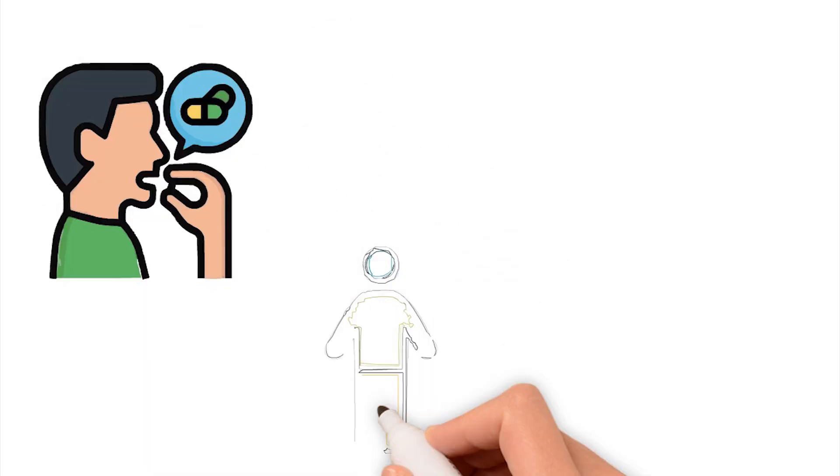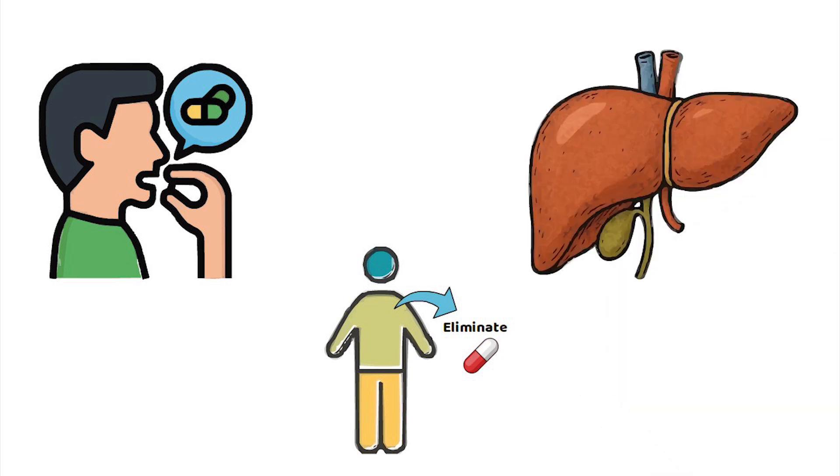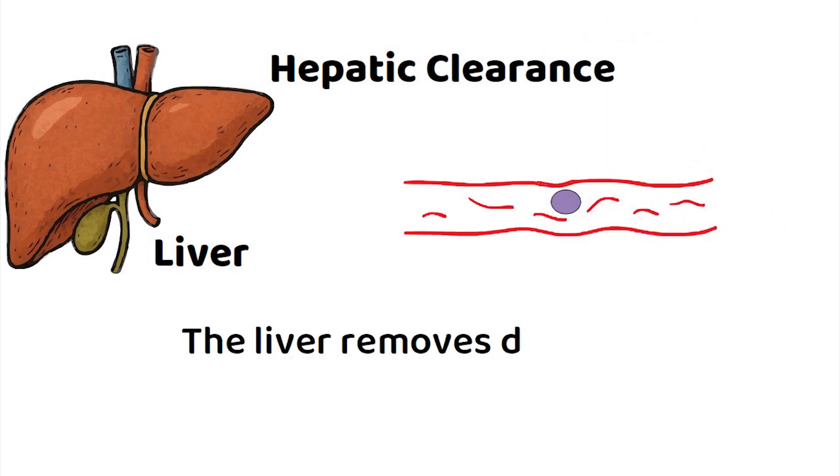Every time you take a medication, your body has to find a way to get rid of it. One of the most important organs in that process is the liver. This process is called hepatic clearance, how efficiently the liver removes drug from the blood.